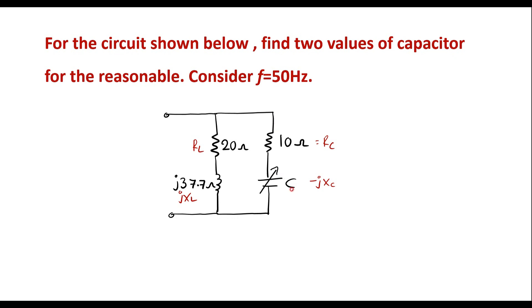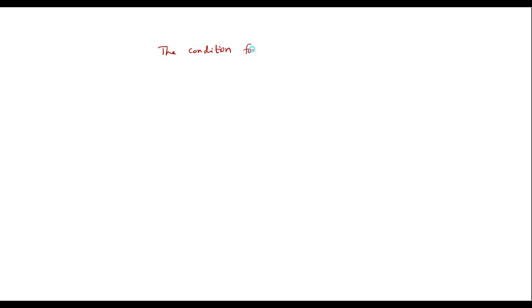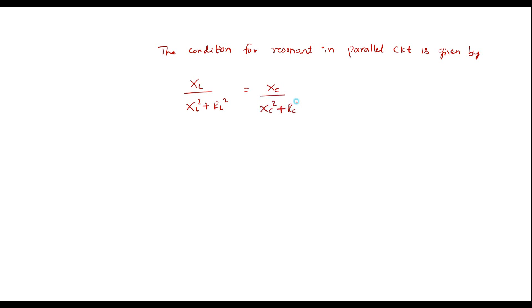In a parallel resonant circuit, we are supposed to calculate the value of C for which the circuit will resonate. The condition for resonance in a parallel resonant circuit is given by: XL divided by (XL squared plus RL squared) is equal to XC divided by (XC squared plus RC squared). That is, the net susceptance of the admittance is zero — the imaginary (J) term is zero — then the parallel resonant circuit will resonate.